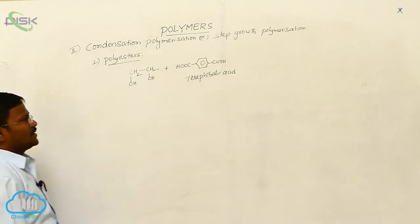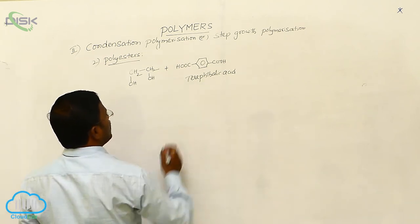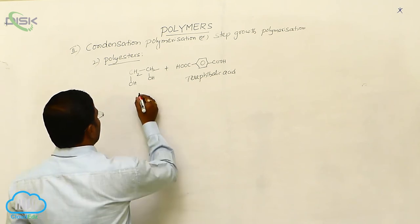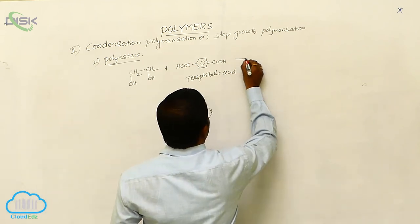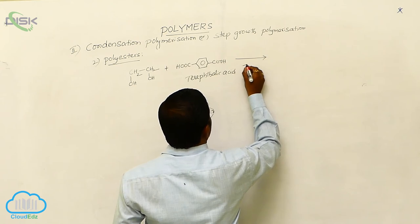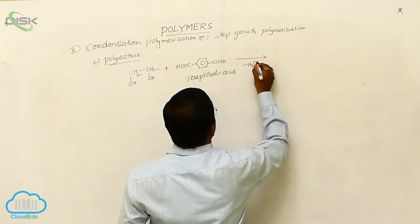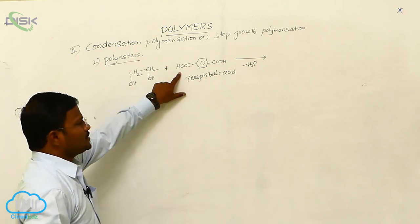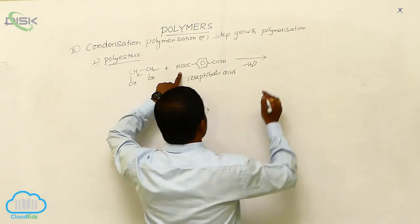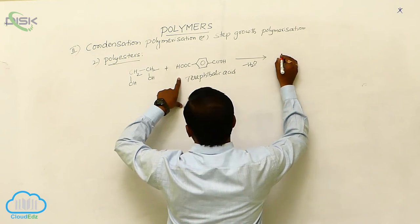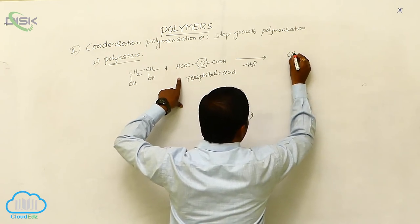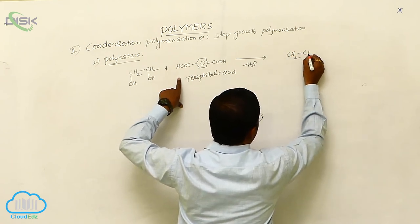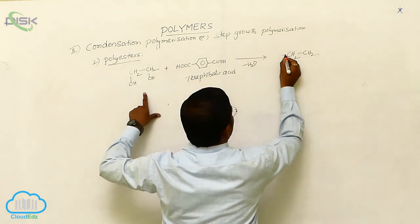Terephthalic acid, or we can consider it as 1,4-benzenedicarboxylic acid. Now these two react with each other. Then loss of water molecule. This is alcohol type of functional group. These are acids. Esterification reaction in the presence of concentrated sulfuric acid or dehydrating reagent produces...